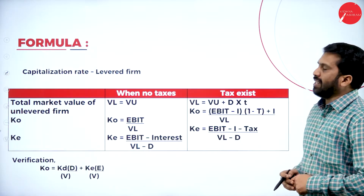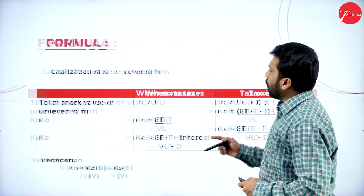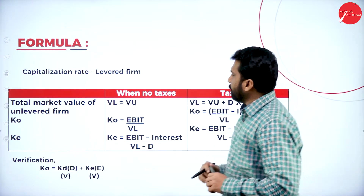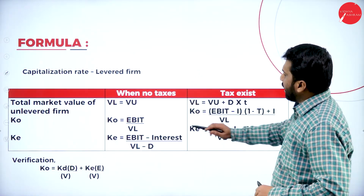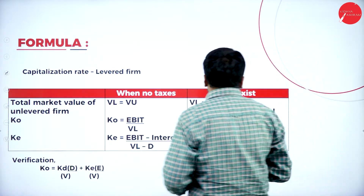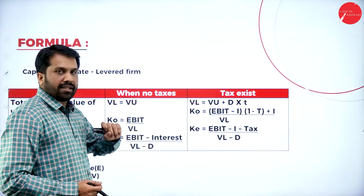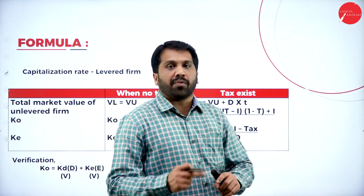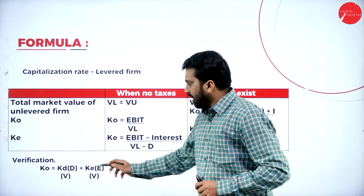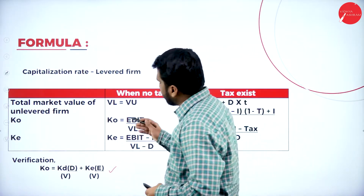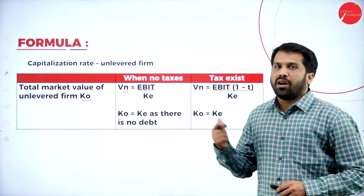For the levered firm — with debentures — the formula gives KO equals EBIT divided by VL. With tax, it becomes EBIT × (1 − tax) + interest (I), divided by VL. We also use EBIT minus interest minus tax for verification, the same approach used in the NOI method. Remember: VU is unlevered (no debenture) and VL is levered (with debenture). If you want, please take a screenshot of the formulas before we go to problems.